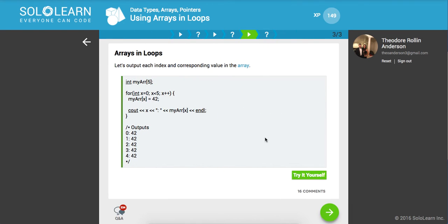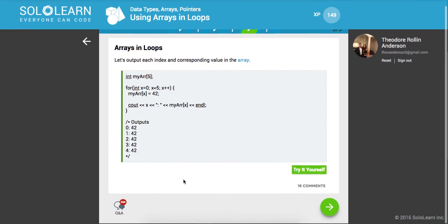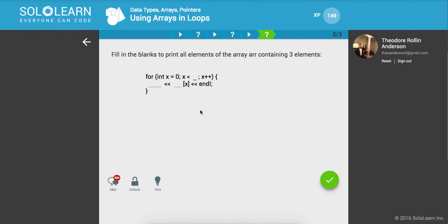Let's output each index and corresponding value in the array. We've declared our array. We've looped through it, and now we want to print it out to the console. What we're going to see here is you're going to get 42 at each of these indexes. So, here's the index, and here's the value of returns. And we can see it's only going up to 4, which is the 5th element.